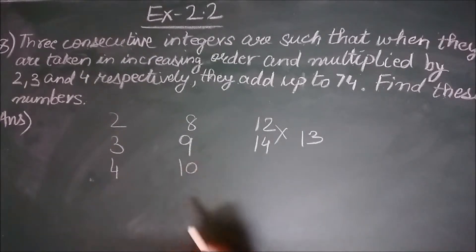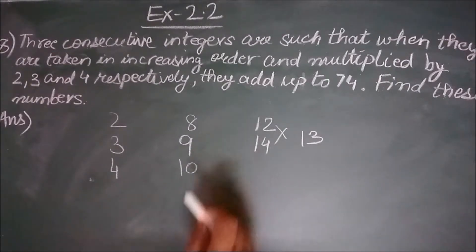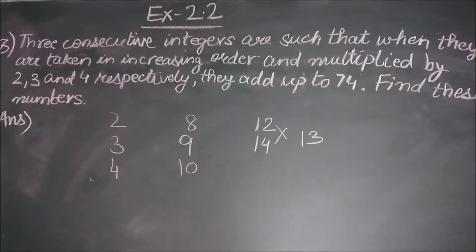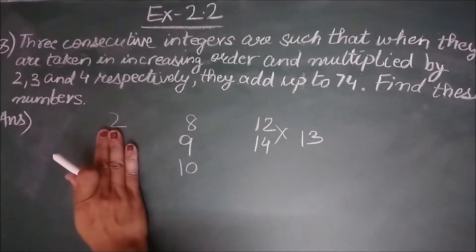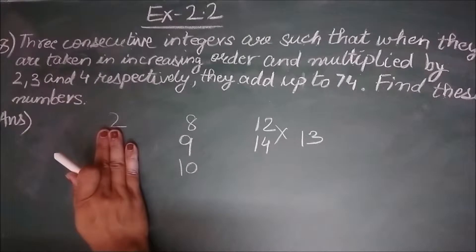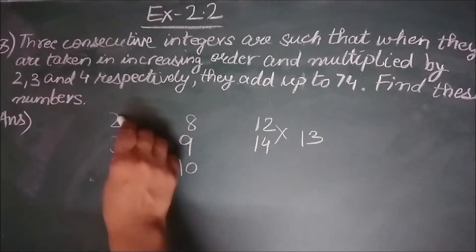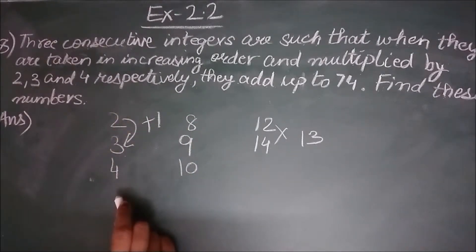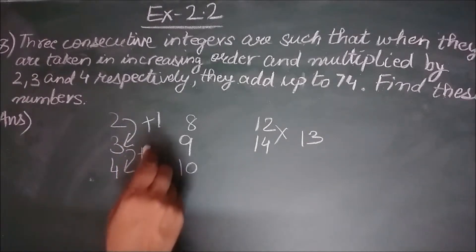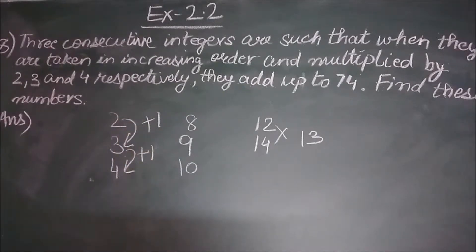Similarly, if we take 8, 9 and 10 — 9 comes immediately after 8 and 10 comes immediately after 9, so these three are consecutive integers. Now, if we know the first integer and need to find the next two, we add 1 each time. Adding 1 to 2 gives 3, and adding 1 to 3 gives 4.